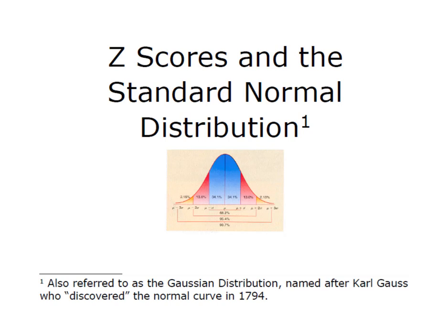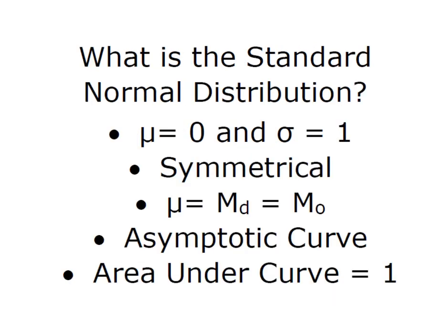Because we're talking about z-scores, we also have to talk about the standard normal distribution. So what in the world is standard normal distribution? It is a standardized curve where the mean is equal to zero and the standard deviation is equal to one.